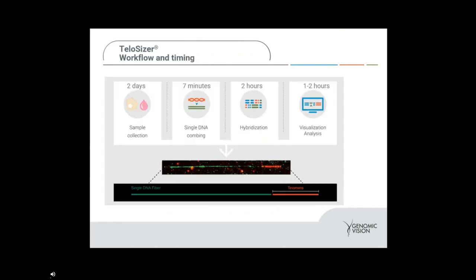Looking at the workflow for Telosizer: sample collection takes a couple of days. Once the sample is collected, we perform single DNA combing, which takes about seven minutes, followed by a hybridization event, which takes two hours. Once hybridization is complete, one to two hours are needed to perform the visualization and analysis of all genome telomeres. This workflow and timing is shown for reference because Telosizer is actually a service product — samples are sent to Genomic Vision's services lab in Paris, France, and Genomic Vision performs this end-to-end workflow, providing back a report of all individual telomere lengths, distribution per patient, and high-resolution images.